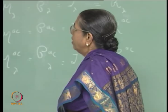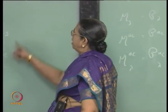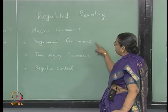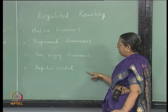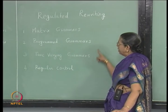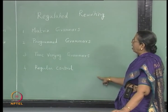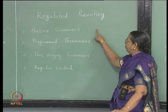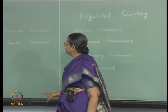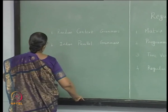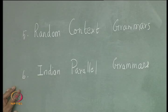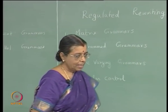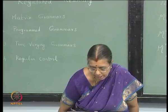The classes we are going to study are matrix grammars, programmed grammars, time-varying grammars, and regular control. These four classes have something in common, which we will see at the end. Apart from that we shall also study the definition of random context grammars and Indian parallel grammars. One by one we will take them up; first we shall take matrix grammars.